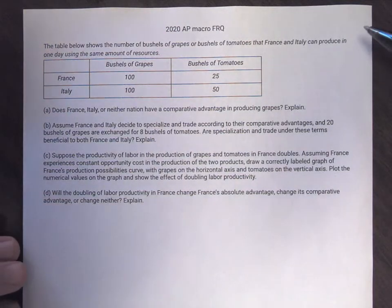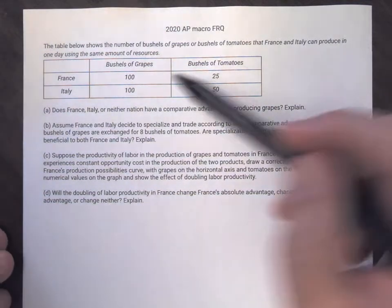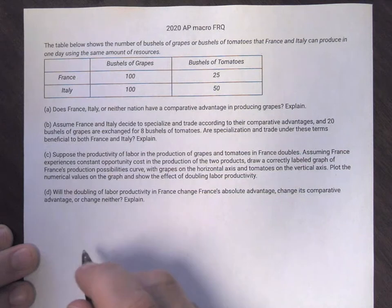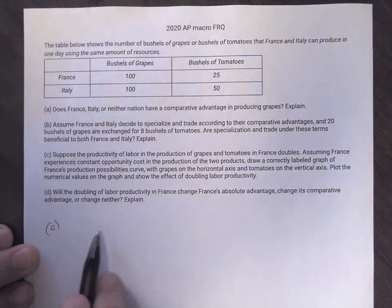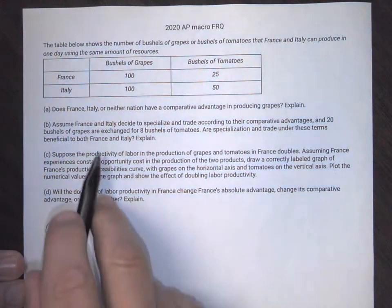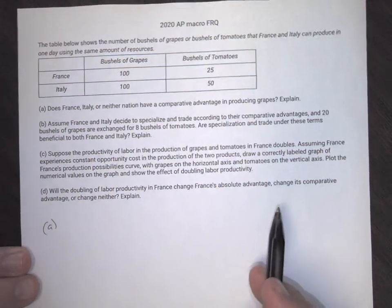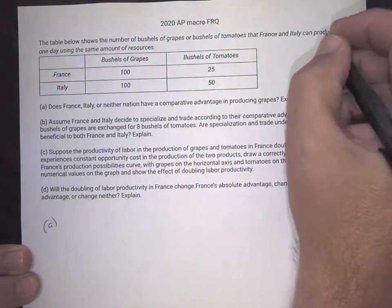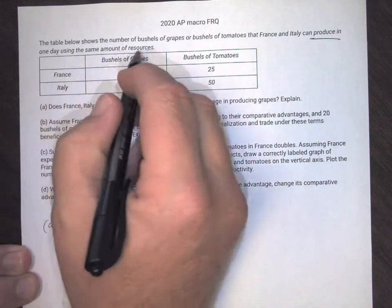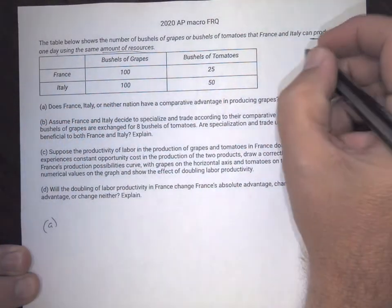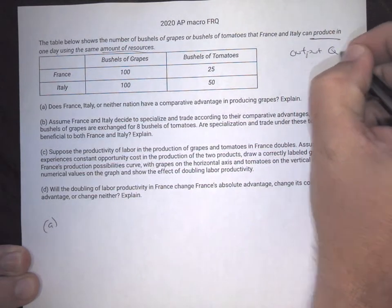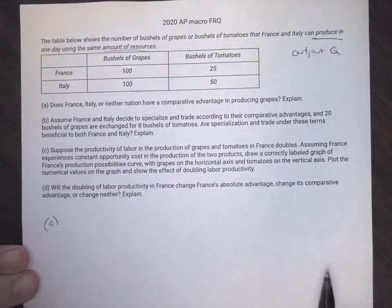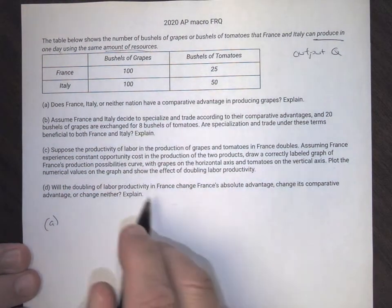On the 2020 AP Macro FRQ — this is the one off MyAP Classroom — we've got France and Italy making grapes and tomatoes. Remember, we're going to try and set these up just like they're asked so it's easy for the grader to see everything. We have 100, 100, 25, and 50. They are producing in a day using the same amount of resources. To me, this is an output question, so I'm going to do 'my other goes over' and get into terms of one so I can solve for comparative or absolute advantage.